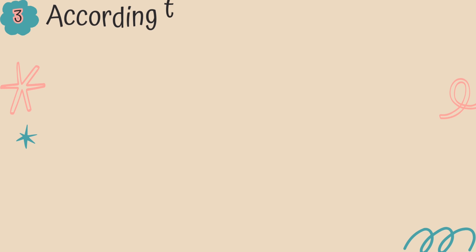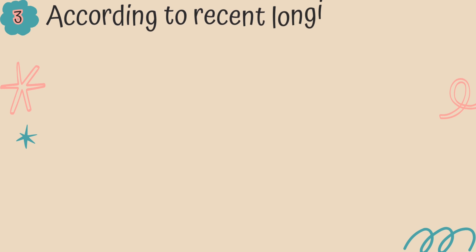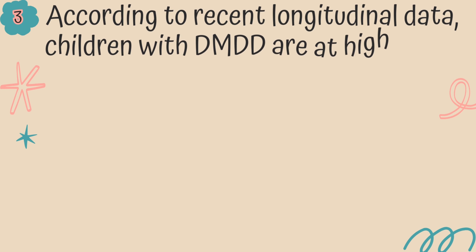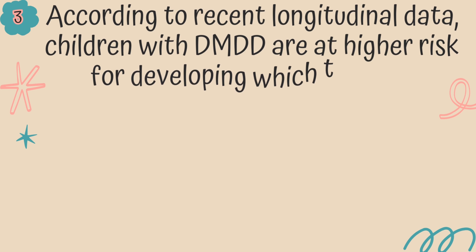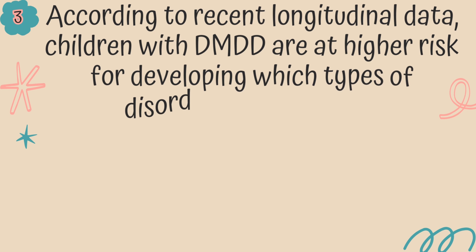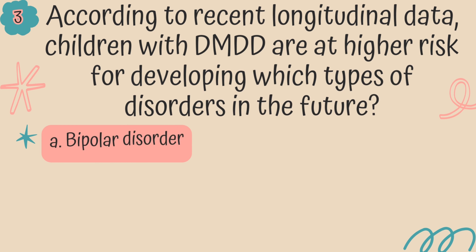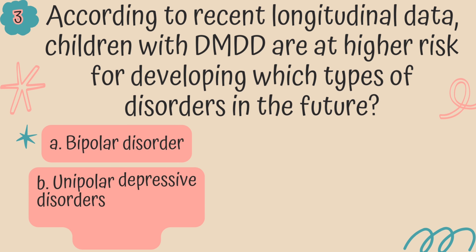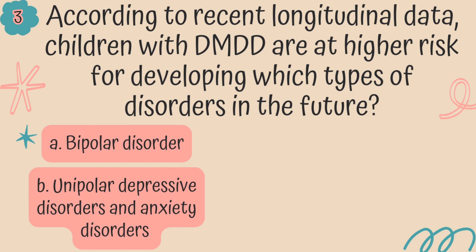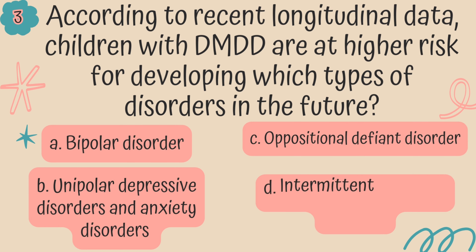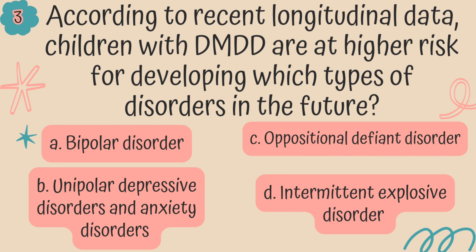Question 3. According to recent longitudinal data, children with DMDD are at higher risk for developing which types of disorder in the future? Is it A. Bipolar disorder, B. Unipolar depressive disorder and anxiety disorders, C. Oppositional defiant disorder, or D. Intermittent explosive disorder?